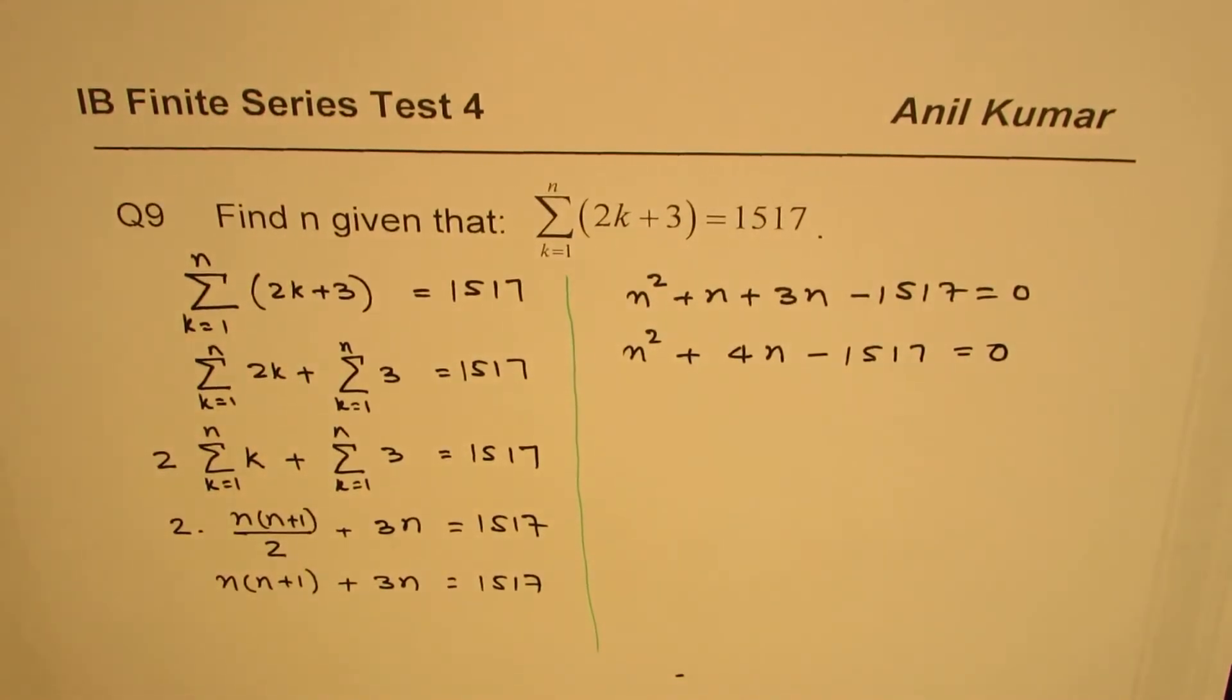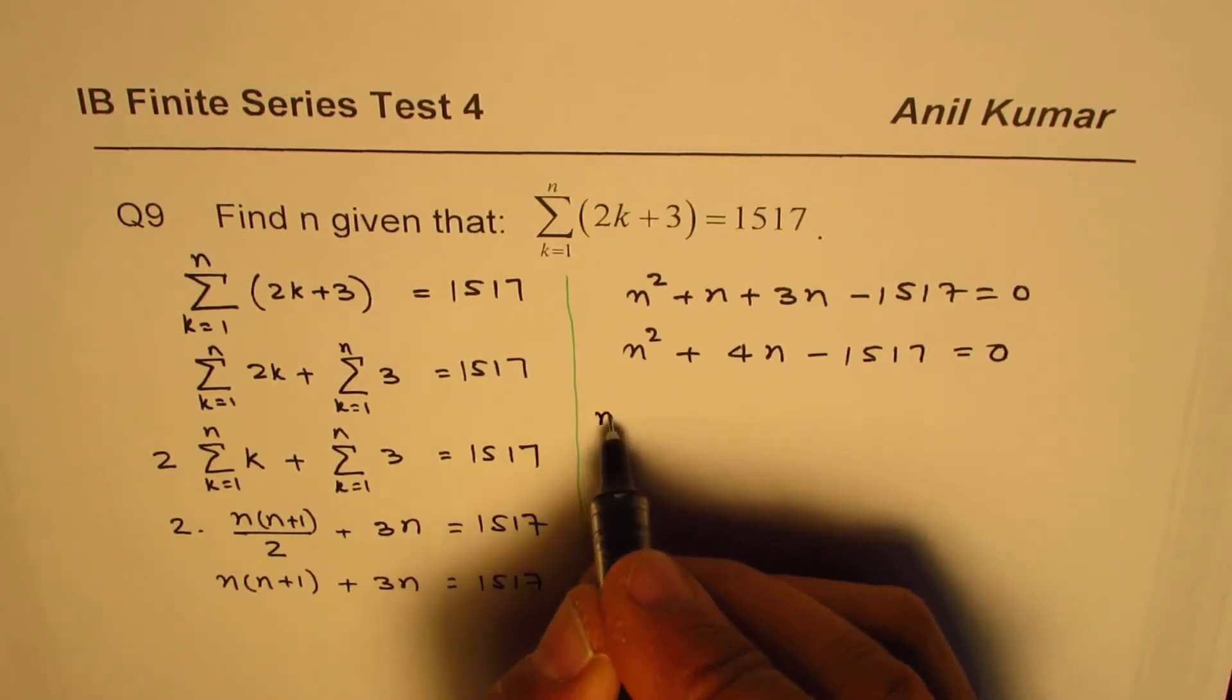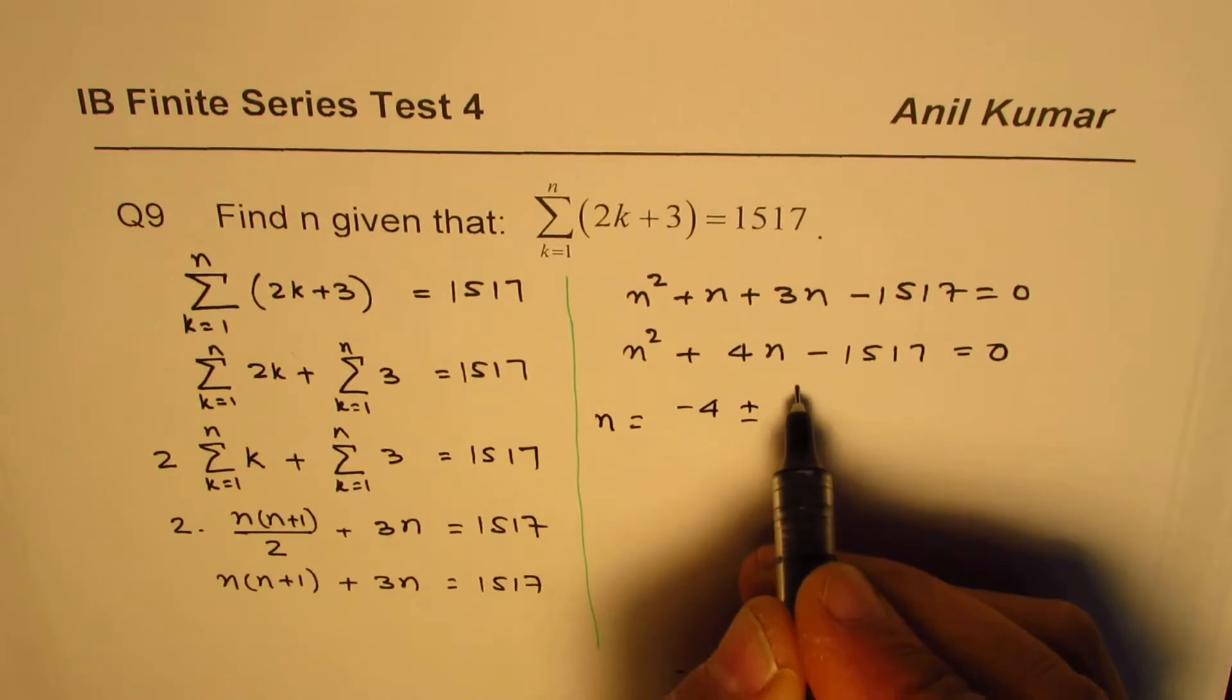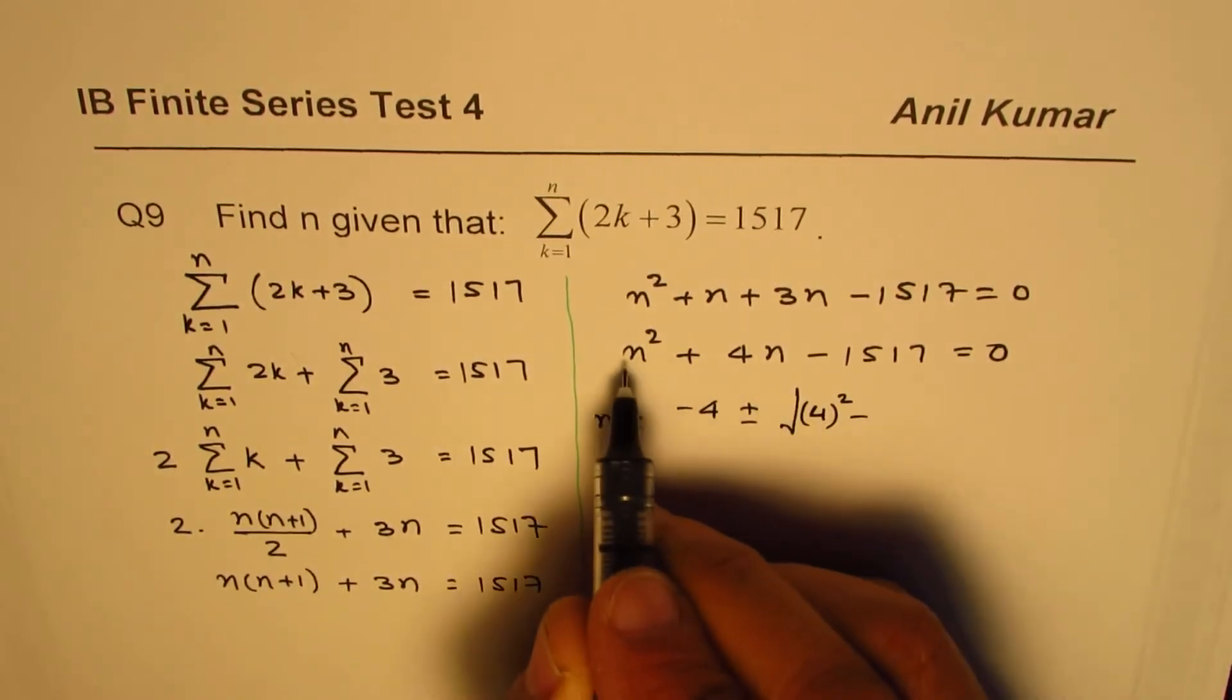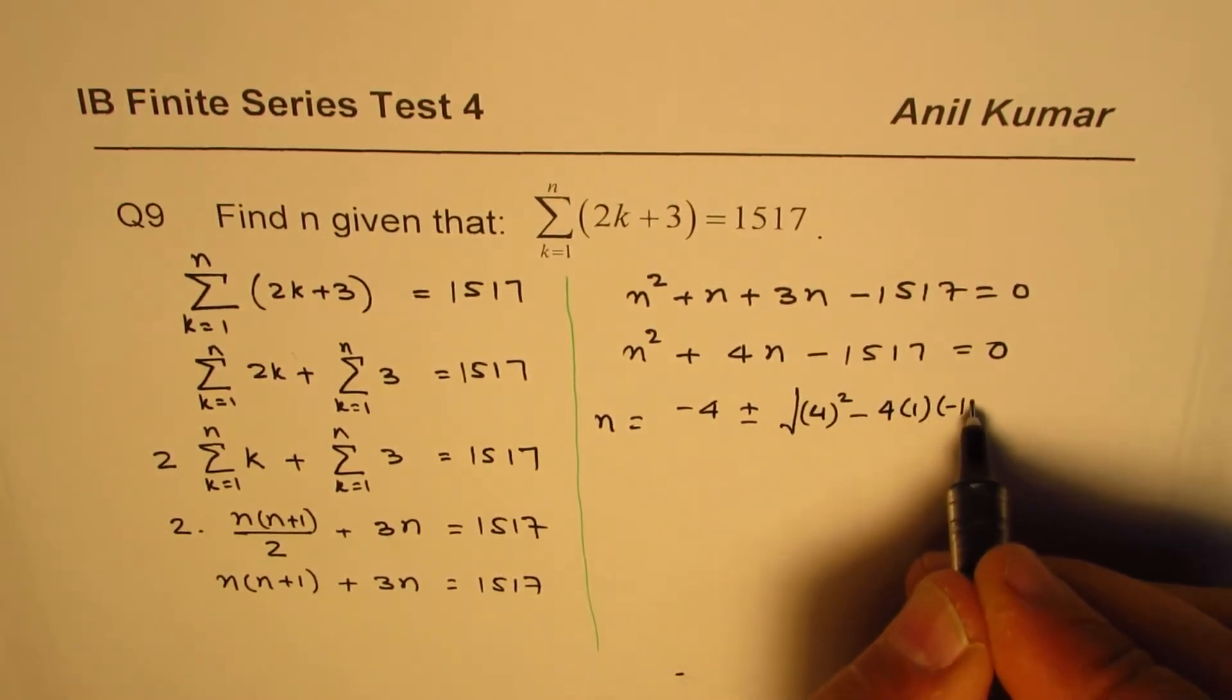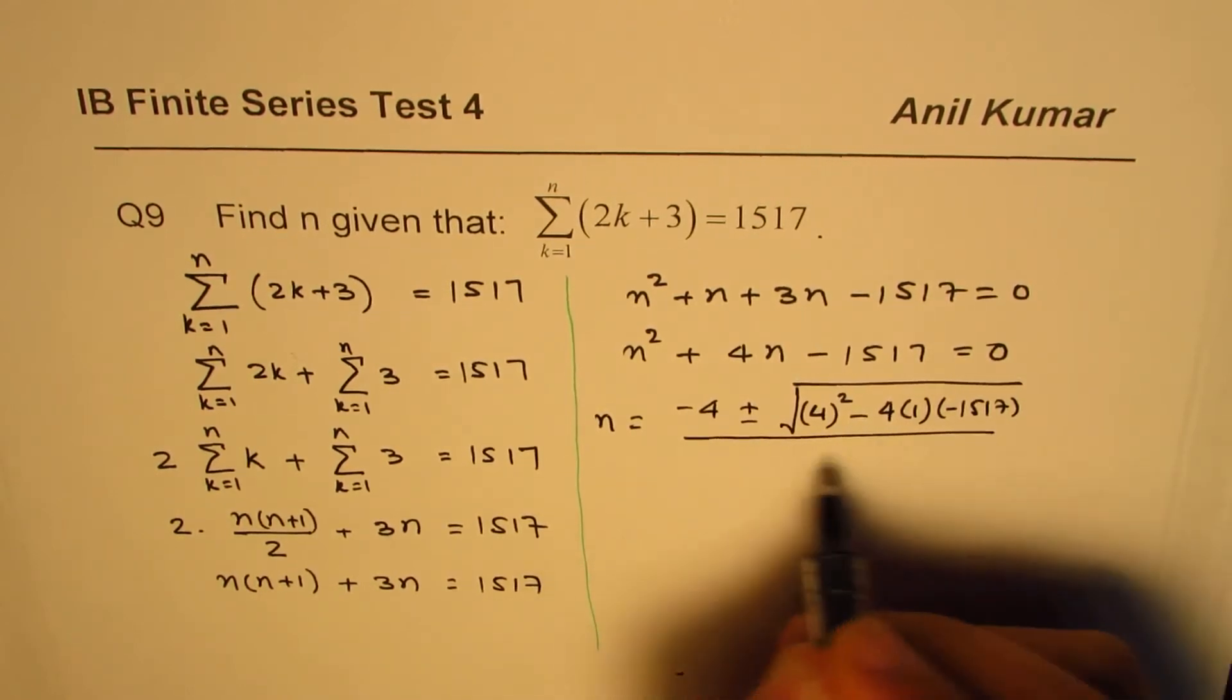So that's the quadratic equation. We can apply the quadratic formula to find the solution. So n equals to minus b, which is minus 4, plus minus square root of 4 squared minus 4ac. 4 times a is 1. C is minus 1517. Square root divided by 2 times a, which is 1.